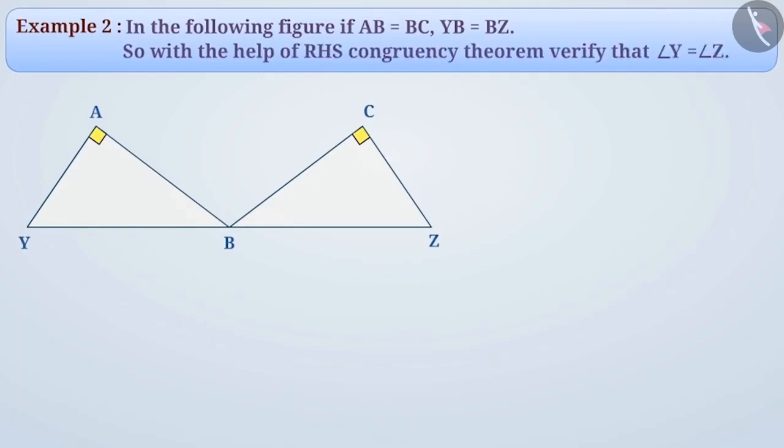By looking at the given figure and reading the question properly, we get the following information. Triangle YAB and triangle BCD are two right angled triangles. In the question, we are given that side YB is equal to side BZ and the side AB is equal to side BC.